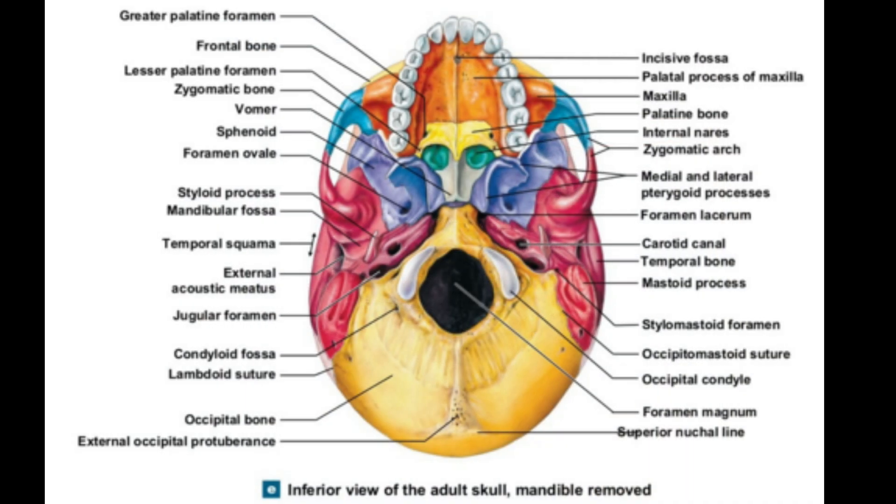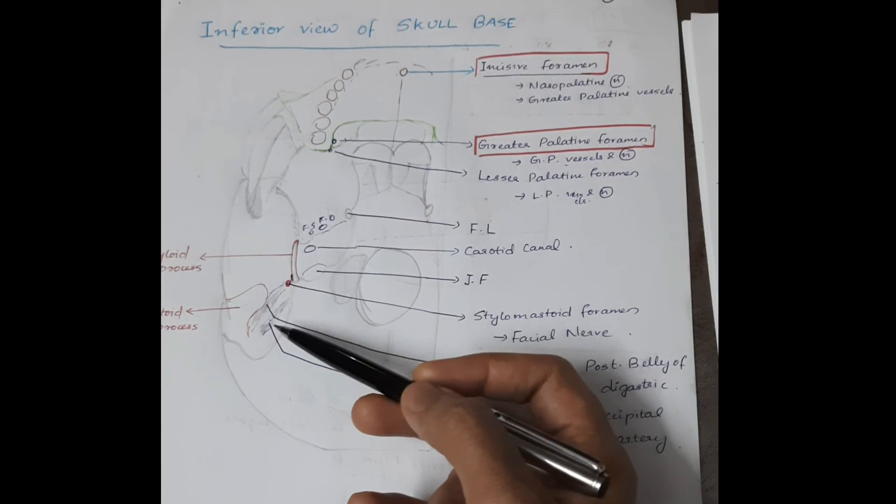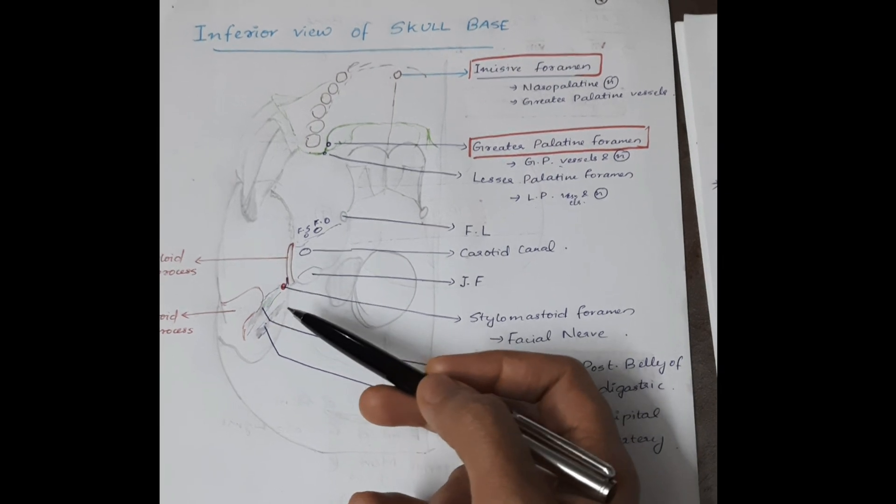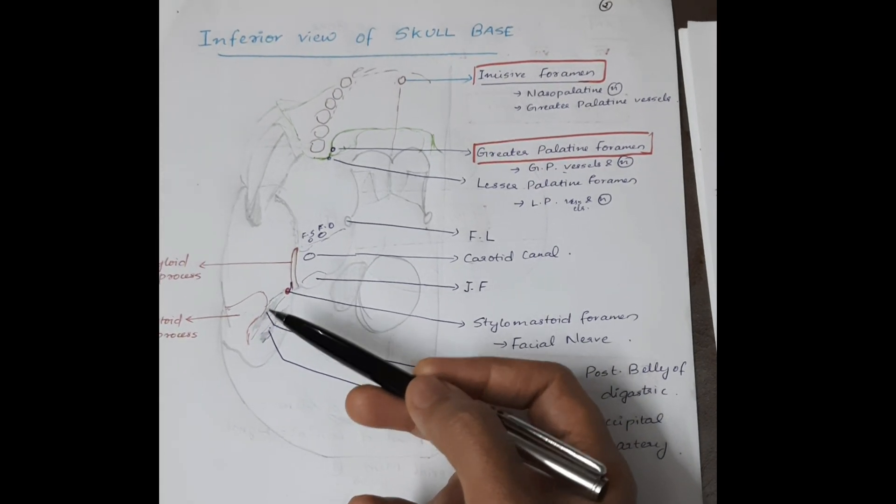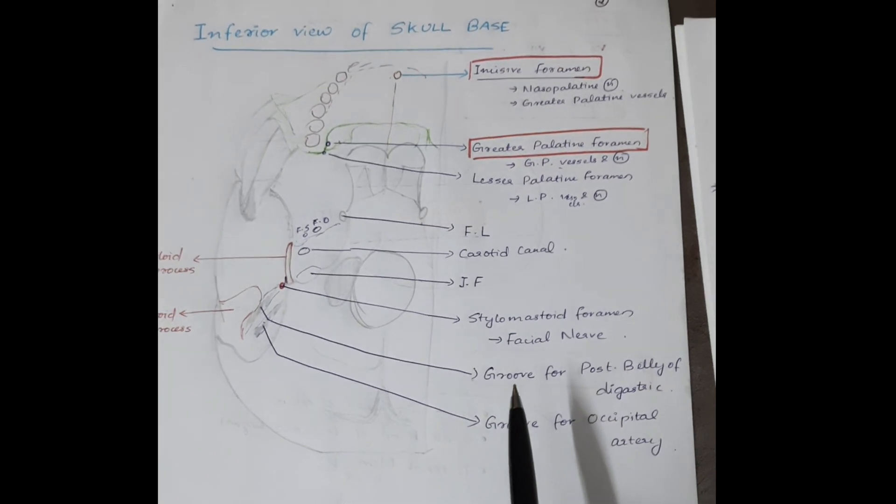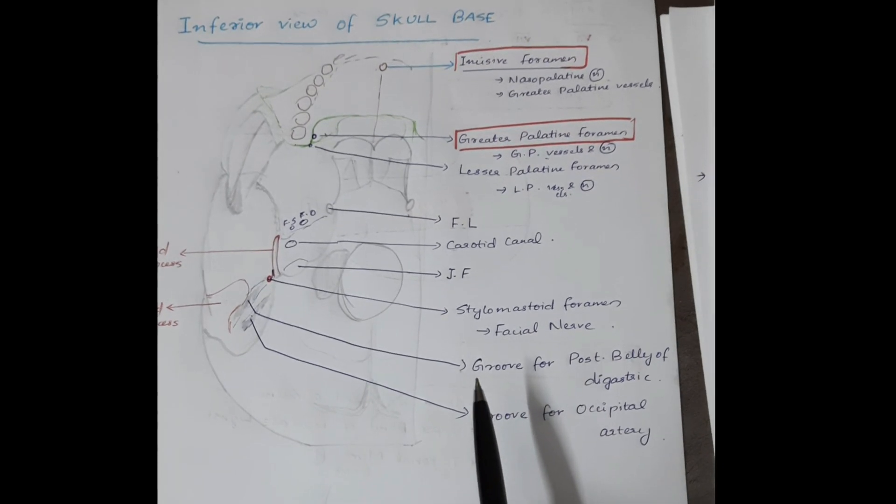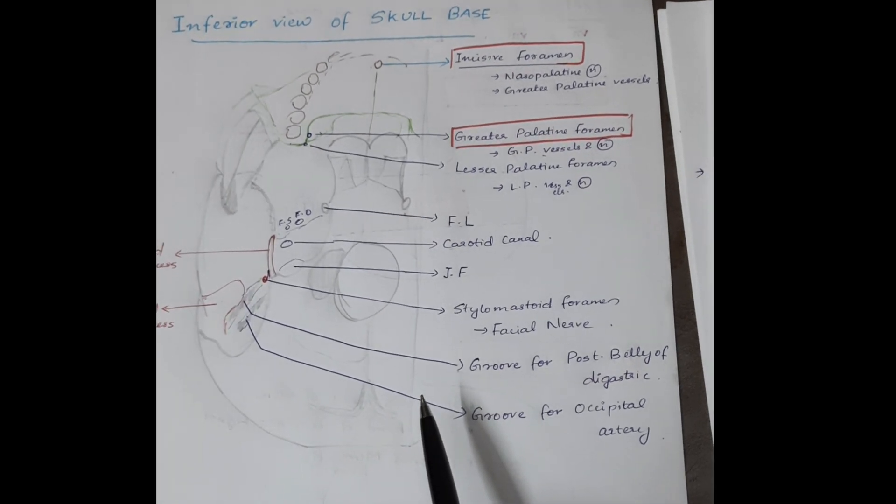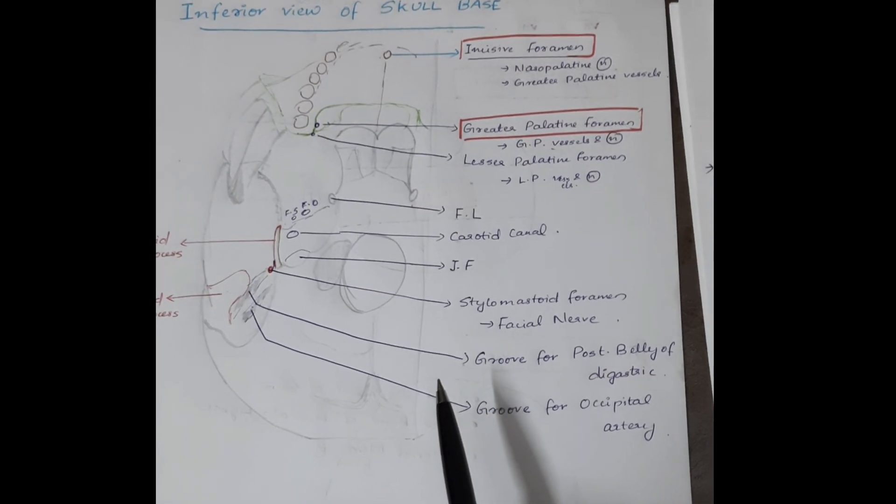Near the mastoid process, there are mainly two grooves present. First groove, this is the first groove and this is the second one. The first groove is for the posterior belly of digastric and the second groove is for the occipital artery.